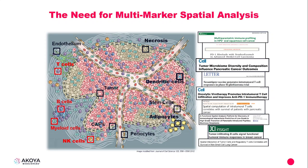The need for multi-marker spatial analysis became apparent as a number of publications began to show that it's not only the composition of tissues that affects biological outcomes, but it's the spatial proximity of the cells within those tissues. This tells us that we need to know not only what cells comprise that tissue, but the location and the relationships between the cells in that tissue.